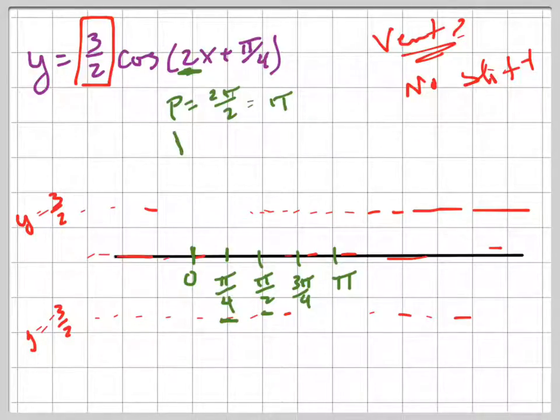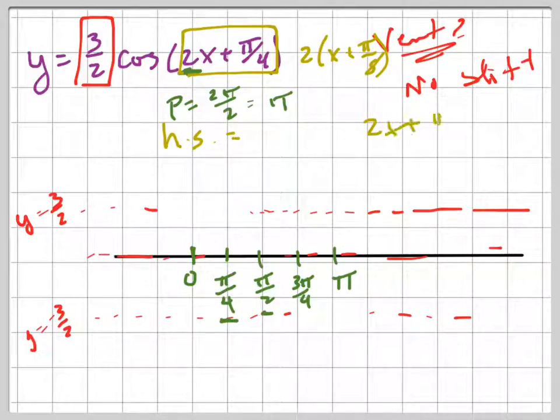And now the last thing I have to do is the horizontal shift. Let me do this in a different color. Let's do this in gold. The horizontal shift is related to, when your book writes it like that, you can either factor out a two, which for some people is easy, that would give you pi over eight. Or you could just set two x plus pi over four equal to zero. Set that whole thing equal to zero and solve it, and you'll get x equals negative pi over eight.